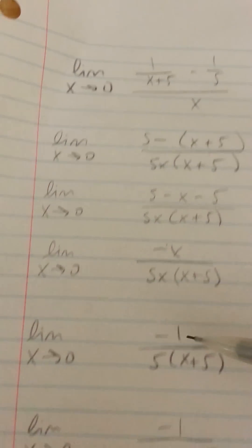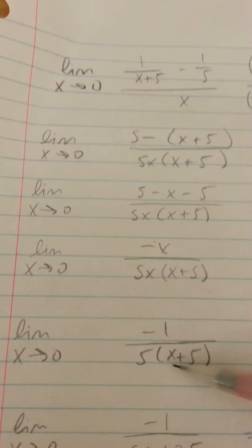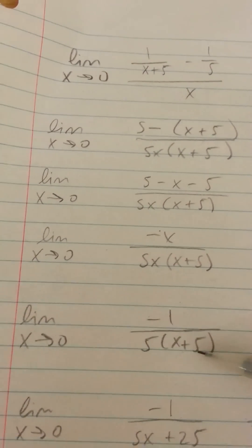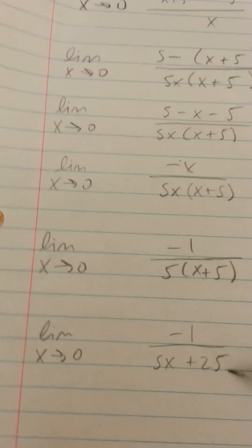Then you can take an x out of there so we end up with negative 1 over 5 times x plus 5, and then we can distribute on the bottom. So negative 1 over 5x plus 25.